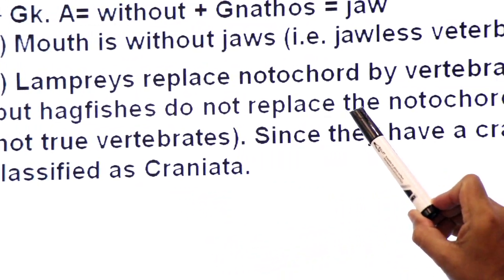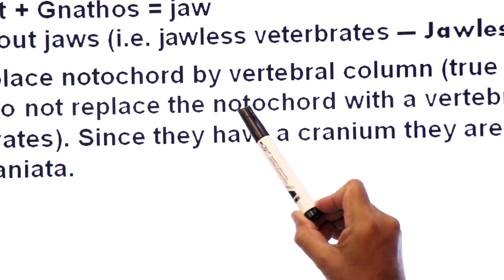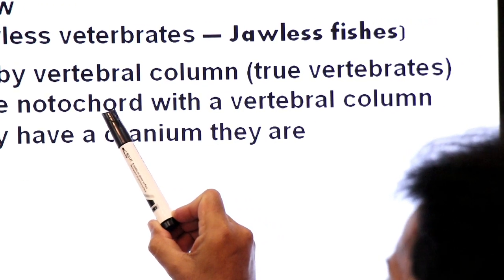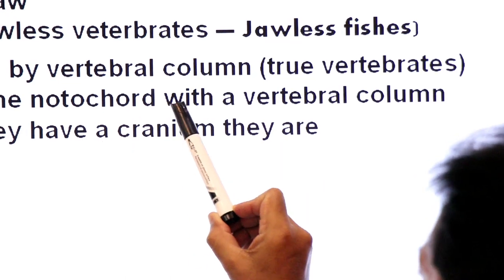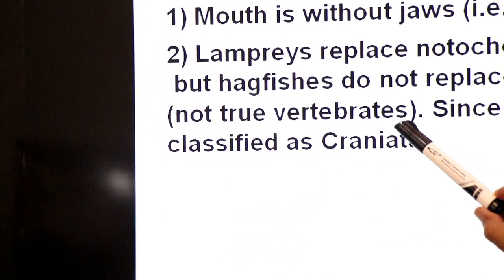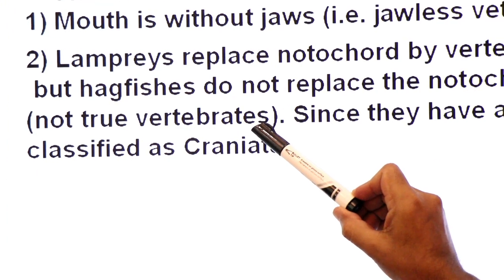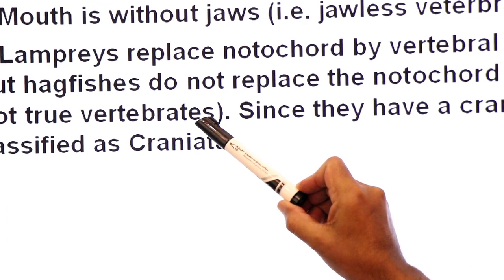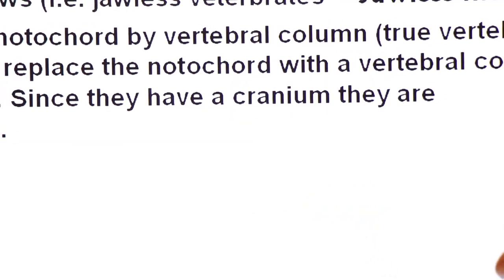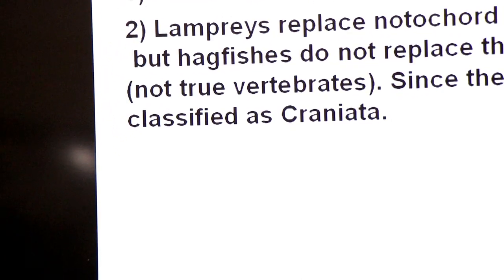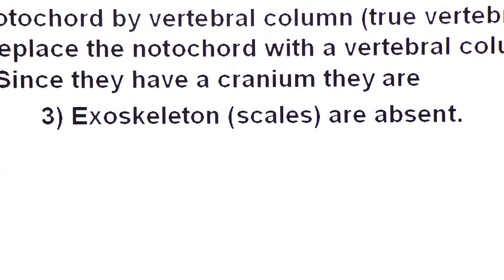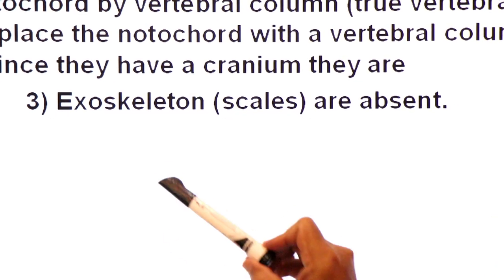In hagfishes, the notochord is not replaced by the vertebral column, so they are not true vertebrates. However, they are still classified as Craniata because cranium is present. Since they have a cranium, they are classified as Craniata. Since these are not true fishes, scales are absent — exoskeleton scales are absent.